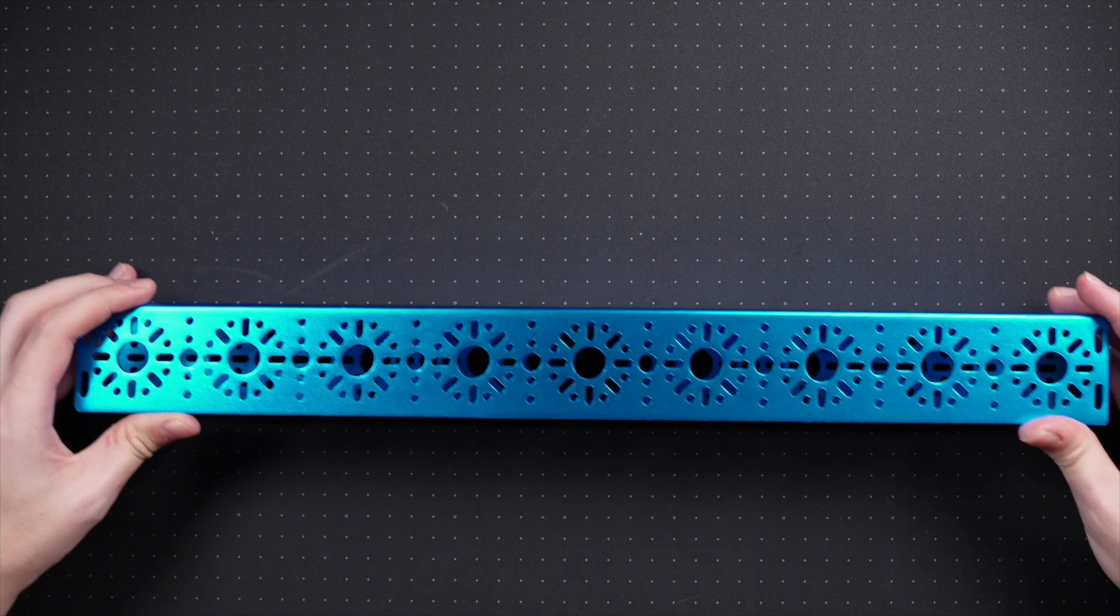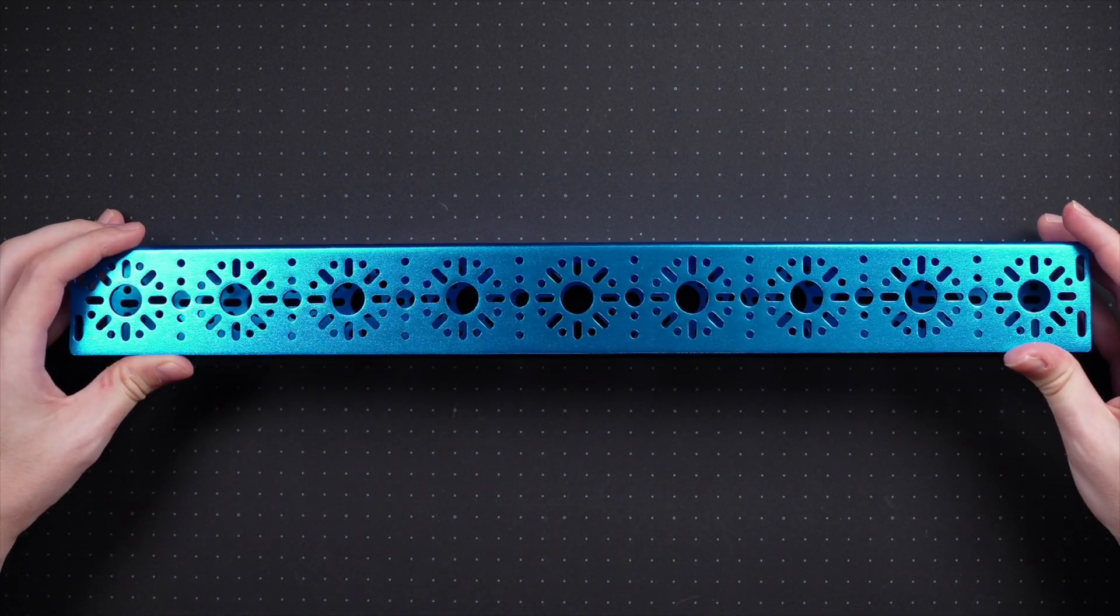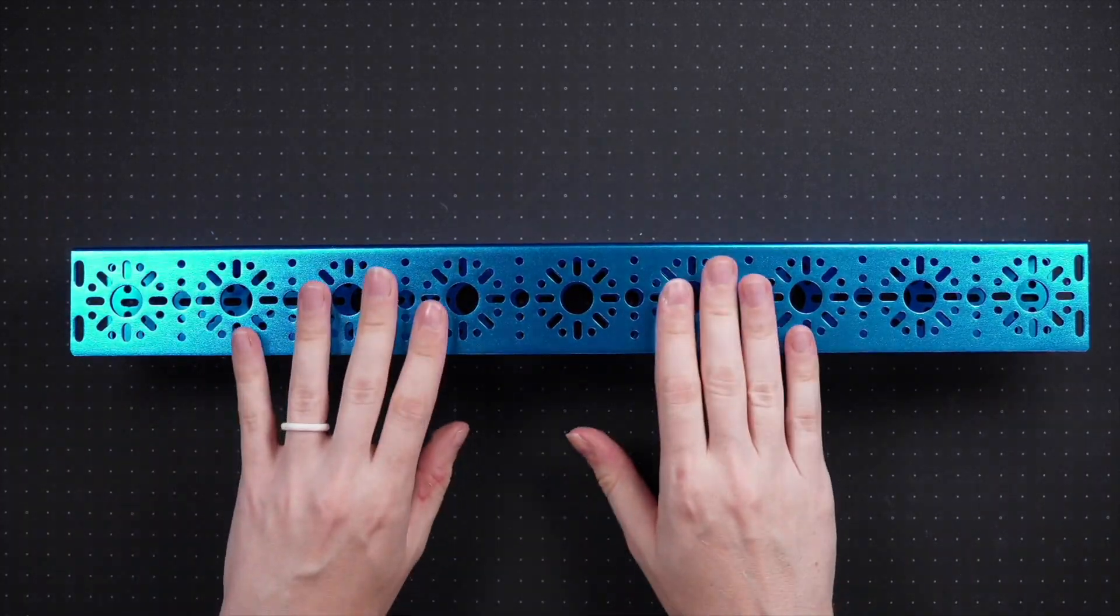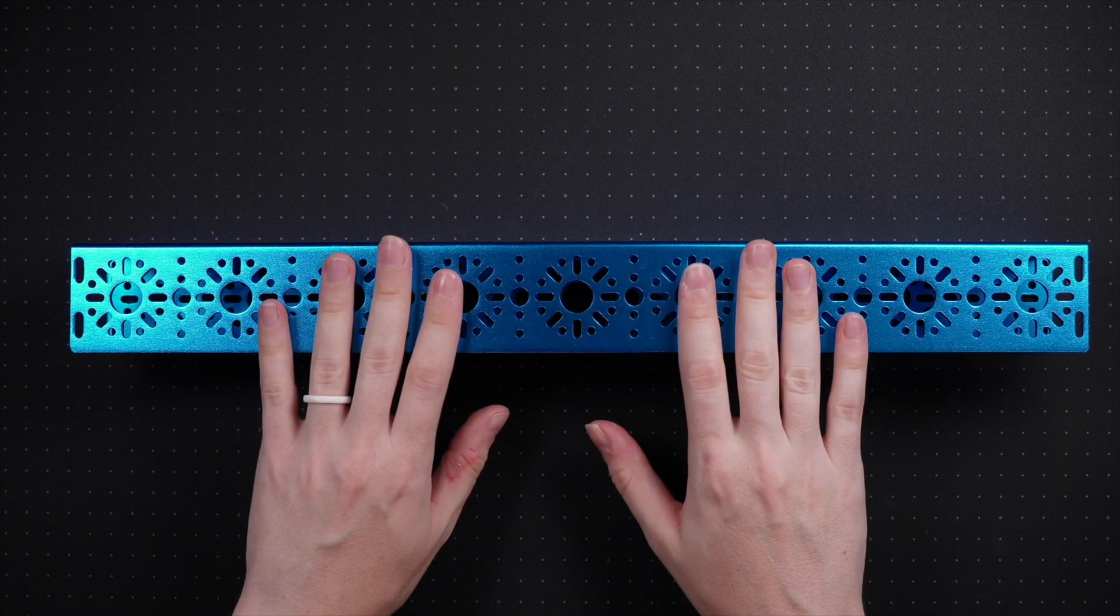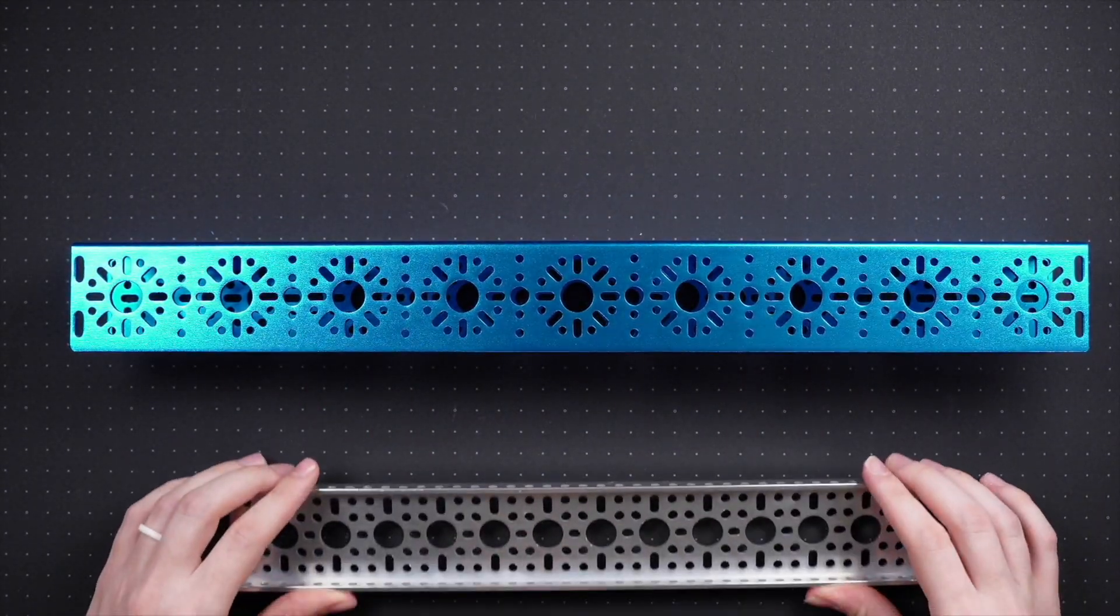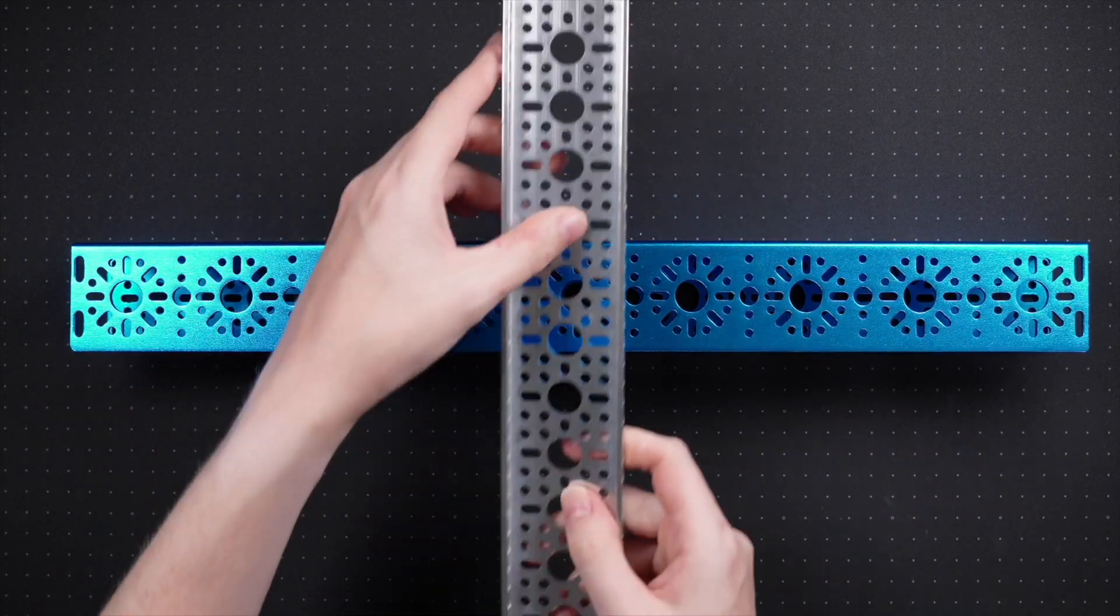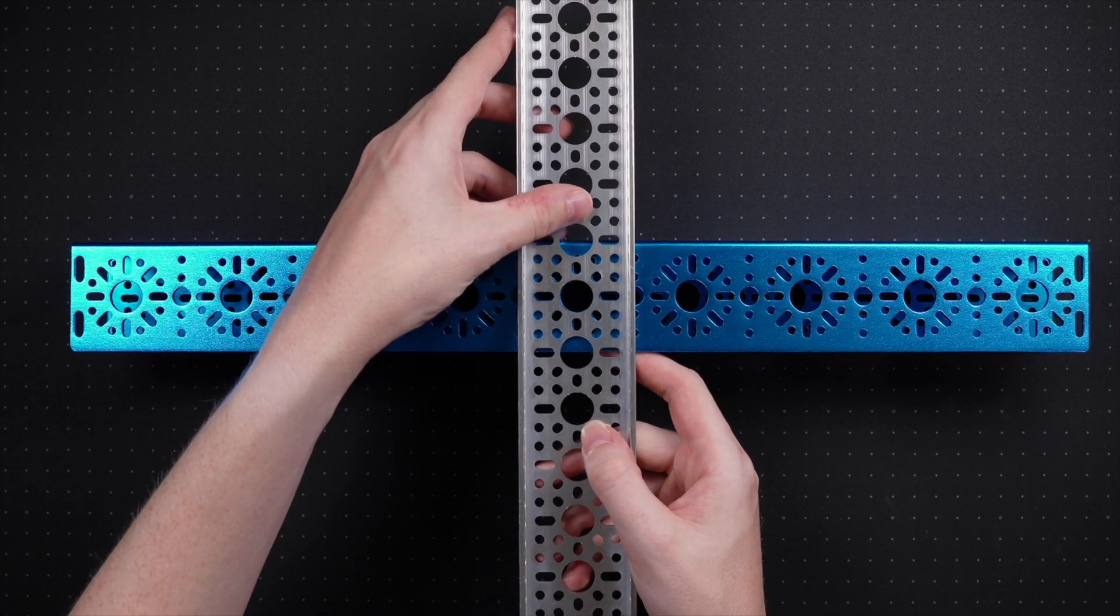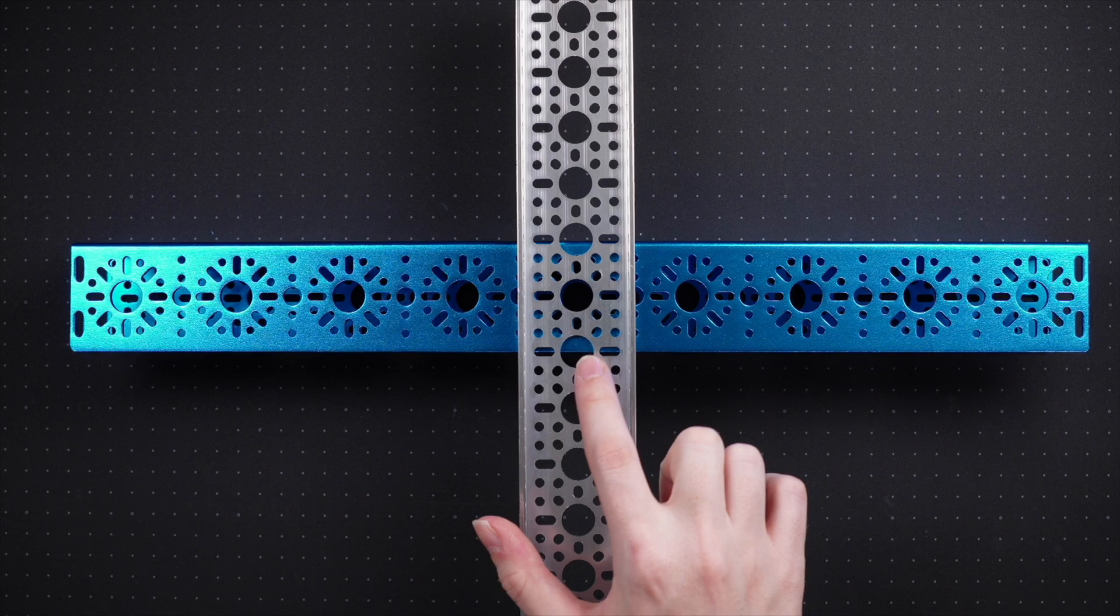Now if you take a look at the hole pattern, it may look a little bit familiar. And in fact, one of the things that they stress is that their structural components are compatible with other manufacturers. So I have here a piece of Go Build A Metal, and if we just go ahead and line these up, you can see that the hole patterns are actually compatible.